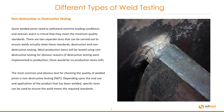Some welded joints need to withstand extreme loading conditions and stresses, and it is critical that they meet the minimum quality standards. There are two separate tests carried out to ensure welds accurately meet these standards: destructive and non-destructive testing. Most production items will be tested using non-destructive testing, as if destructive testing were implemented in production there would be no products left. NDT is commonly used, and depending upon the end use and application of the welded product, specific tests can be used to ensure the weld meets the required standards.